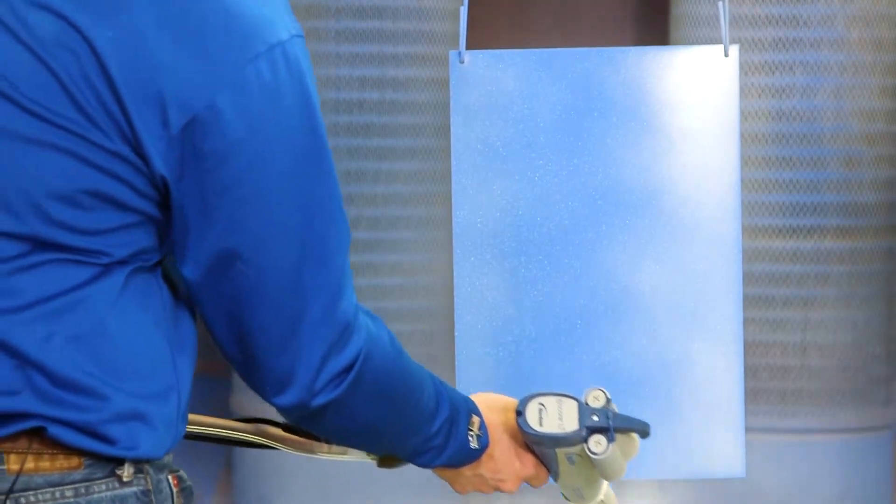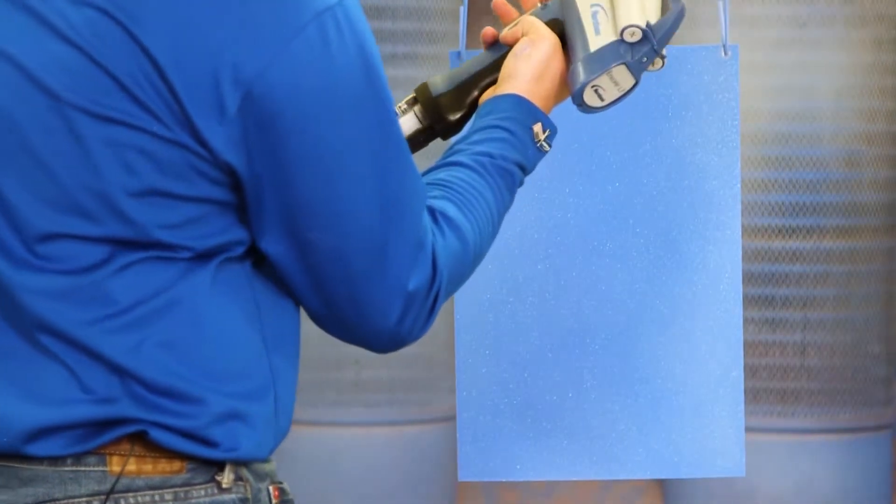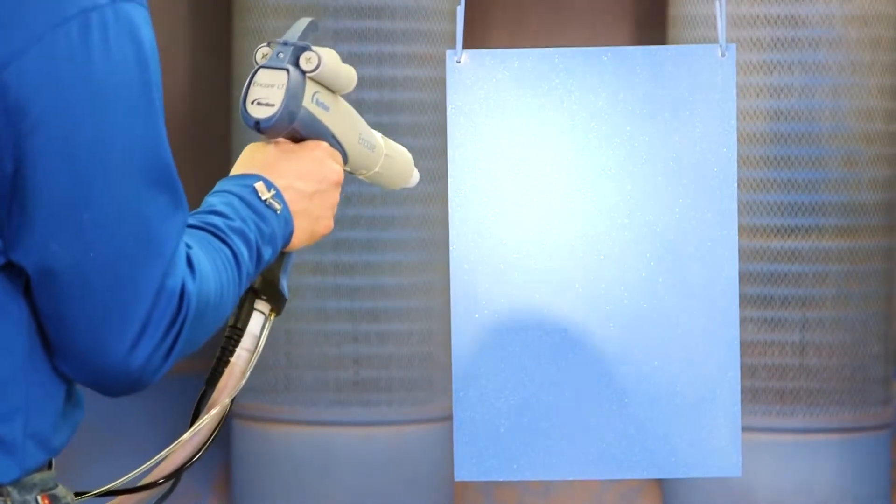So you can see a nice even spray pattern, a lot of powder going onto the part, keeping everything very consistent. You can inspect the part with the light on the gun.